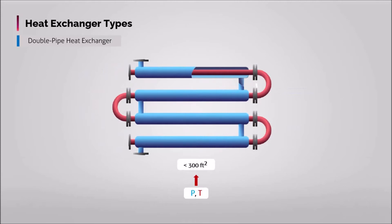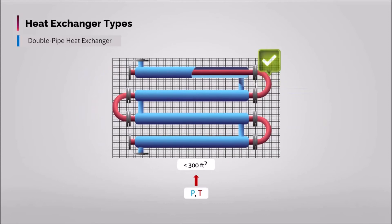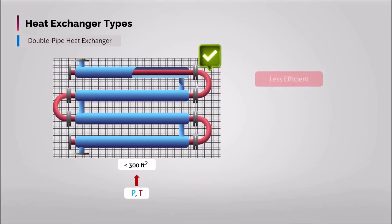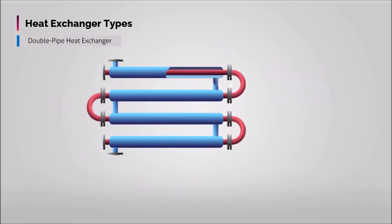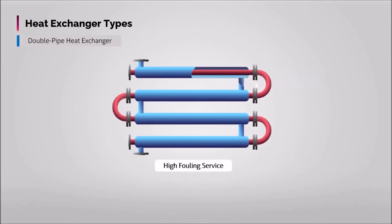Double pipe exchangers are mainly used for small duties, normally requiring less than 300 square feet, and are appropriate for high pressures and temperatures and thermally long duties due to their easily removable parts. However, in large-scale industries, double pipe exchangers are not preferred as they are less efficient, occupy more area, and have a fairly higher cost per square meter. This heat exchanger is applied generally for high fouling services such as slurries and for small heat duties.